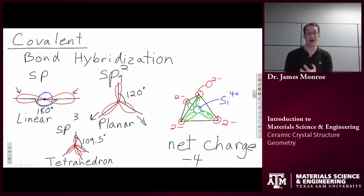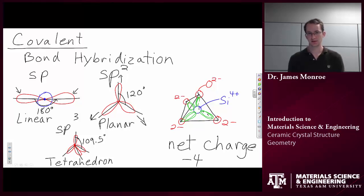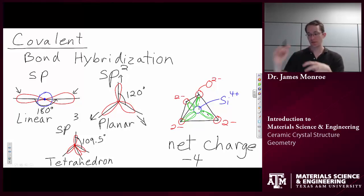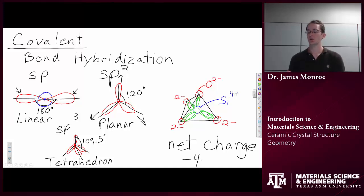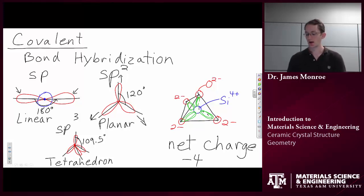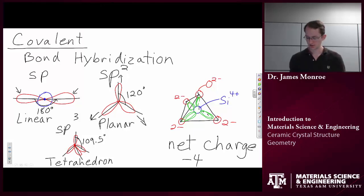Since we can't have a net charge on something, these silicates will do one of two things. They'll either bond with other silicon tetrahedra, where two silicon atoms share an oxygen in between — we call that a bridging oxygen. Another way they solve this charge neutrality issue is by bringing in different types of ions that can donate electrons to the system. This allows for very complex and diverse crystal structures with silicate materials.